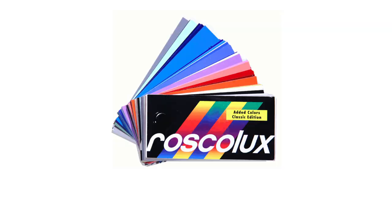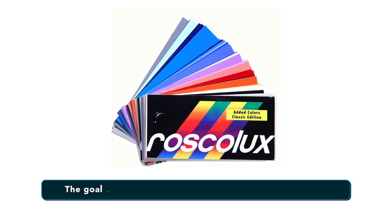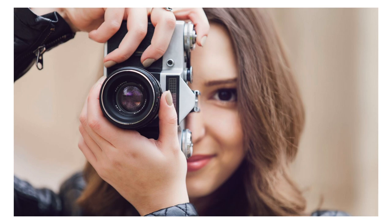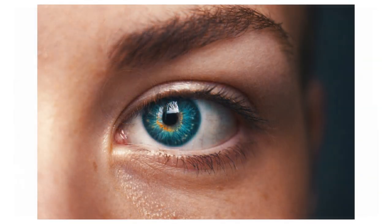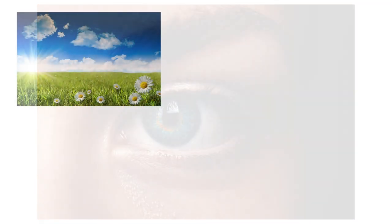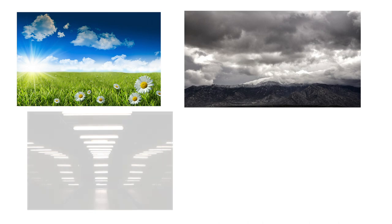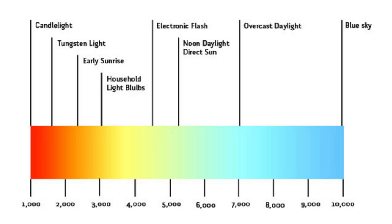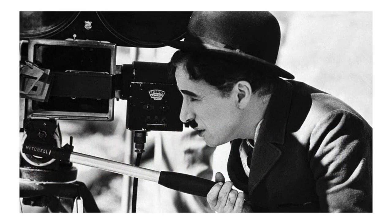Lighting gels serve a number of purposes, but the ultimate goal of any gel is to change a light's color temperature. Our eyes and our cameras don't see color in the same way. Our eyes can determine what something looks like regardless of the light — whether we're outside in the bright sun, on a cloudy day, inside under fluorescent lights, or even by candlelight. Cameras can't do that. Managing color temperature so images on film look like we expect them to is a tricky balance filmmakers have dealt with since the advent of motion pictures.